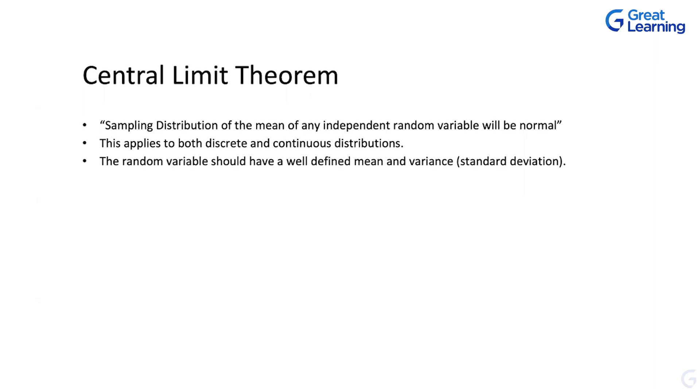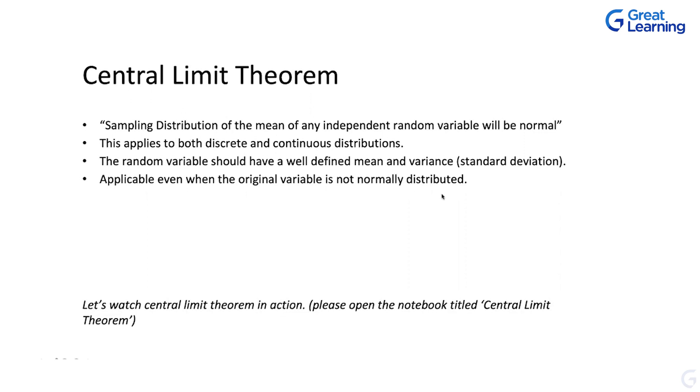So the random variable should have a well-defined mean and variance. Variance essentially means standard deviation. So square root of variance is nothing but standard deviation. That's why we call well-defined mean and variance. That's the matrix that we capture. It's self-explanatory. Then applicable even when the original variable is not normally distributed. Is it the point that we covered already? So even if the original variable is not normally distributed, the mean of the distribution of the means of that population will be normally distributed. So let's look at this Central Limit Theorem.